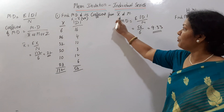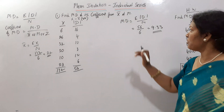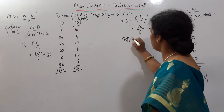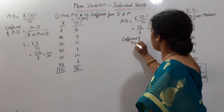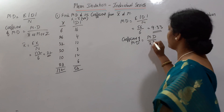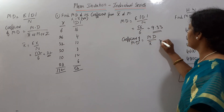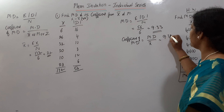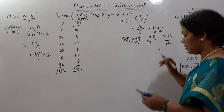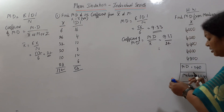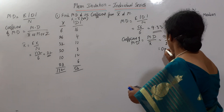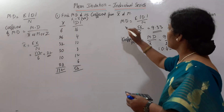Next, we are also asked for the coefficient of mean deviation. The formula is mean deviation divided by X̄, because we took deviations from X̄. Mean deviation is 9.33, divided by X̄ which is 22. So 9.33 divided by 22 comes to 0.42. That is the coefficient of mean deviation from X̄.